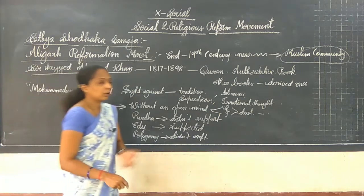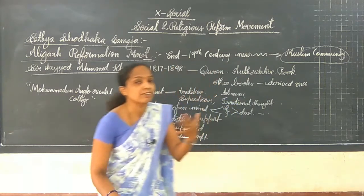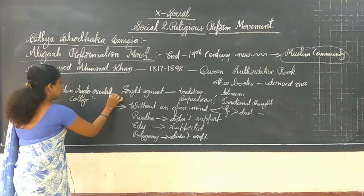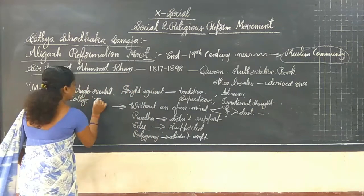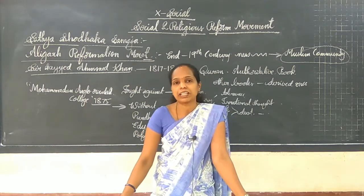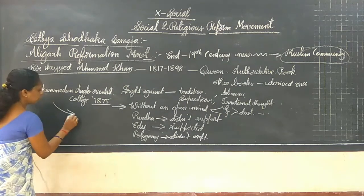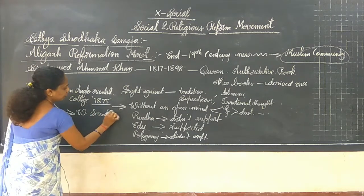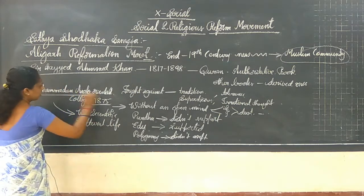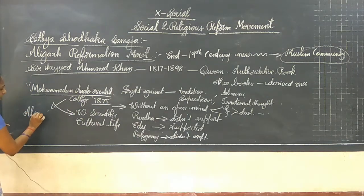In order to bring or implement these matters into reality, for that reason he was supposed to establish a Mohammedan Anglo-Oriental College in the year 1875. And he utilized this institution in order to spread Western scientific and cultural life. For that purpose, this institution was established in Aligarh.